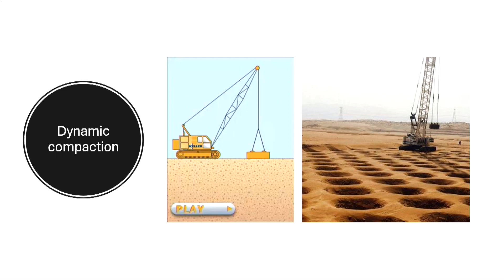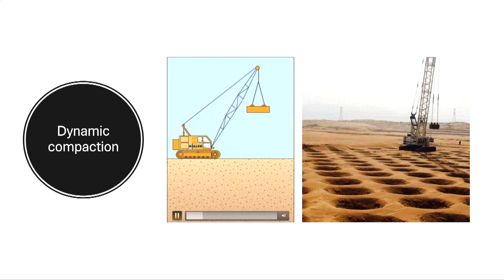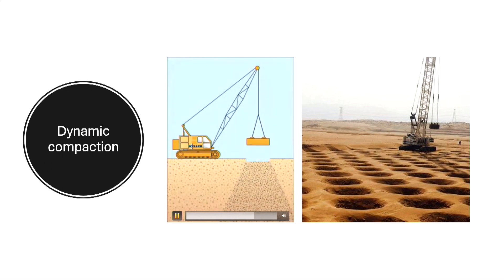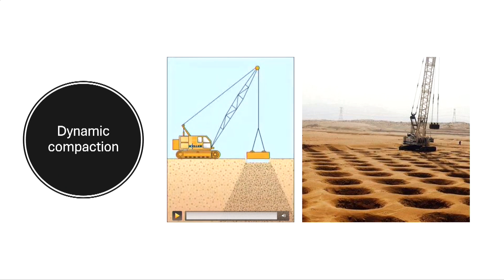Dynamic compaction is something typically seen when you want to consolidate a base. You take a load, drop it, and that sets up a compaction. Typically you make a grid because the compaction propagates downward, so the next time you compact somewhere else. This is practically used, and we have all seen it at some point when soil is compacted.